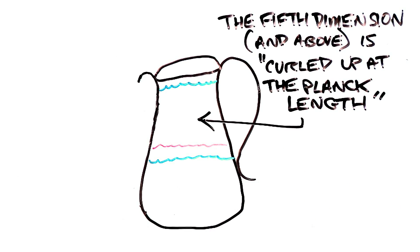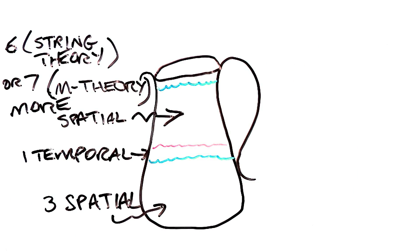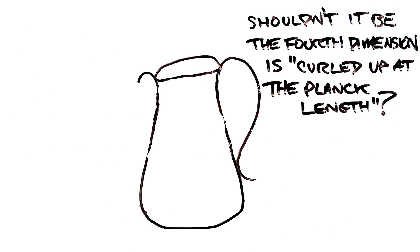How is it possible to have three spatial dimensions, then add one temporal, then six or seven more spatial dimensions extending from that? It would make more logical sense if they said the fourth dimension and above are curled up at the Planck length.